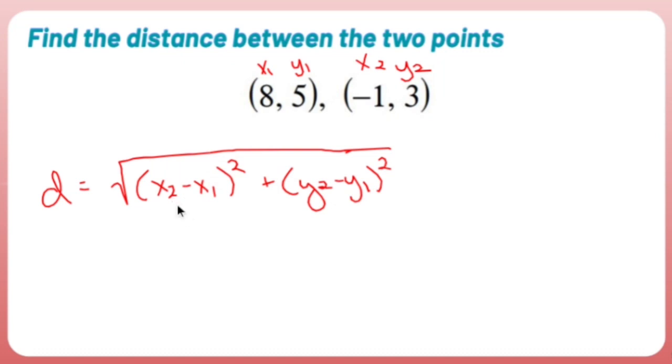And if you look online and say, oh, I saw online that this is supposed to be x sub 1 minus x sub 2. It doesn't really matter because whether this is positive or negative, once you square it, it's going to be positive anyway. Who frigging cares?